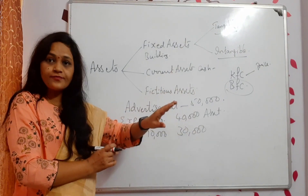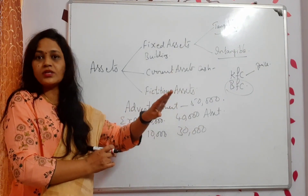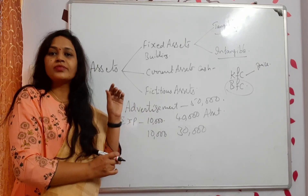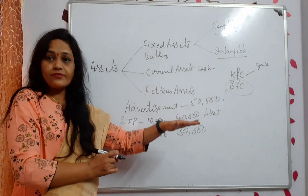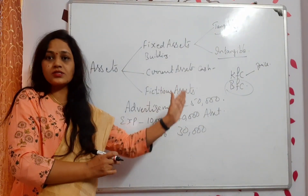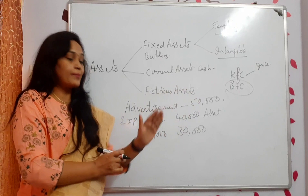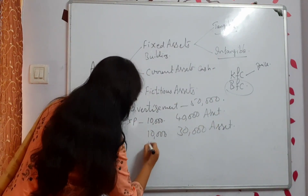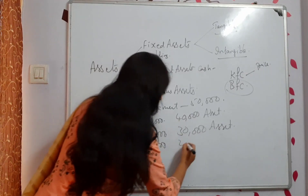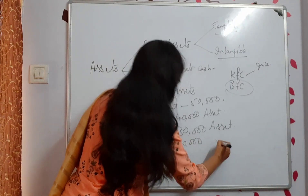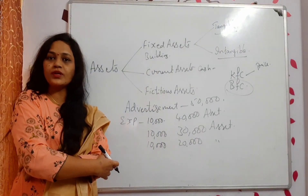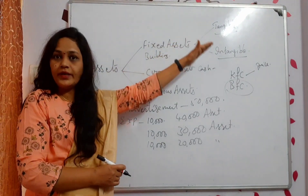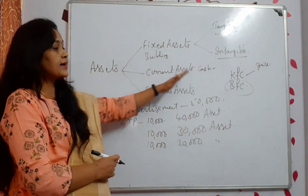In the second year, another 10,000 as expense and 30,000 as asset. This asset has zero real value — you can't see or feel it. It is not tangible or intangible. You have already spent the money, but you enjoy the benefit over five years. The balance shown each year is the fictitious asset.